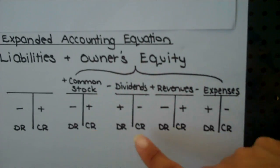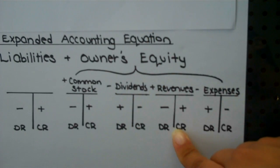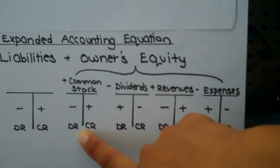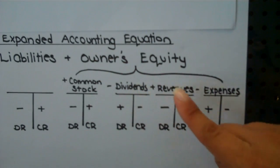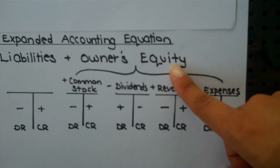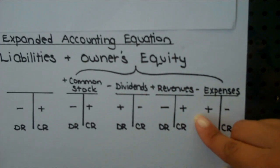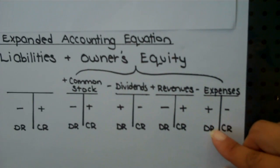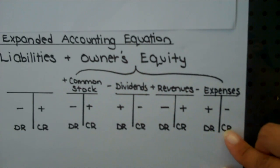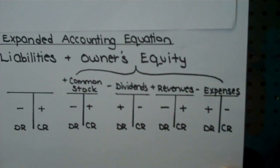Common stock and revenues are identical, both increasing on the right-hand side. If you wanted to decrease either one of those accounts, you would do so with an entry on the left-hand side or the debit side. Dividends and expenses both decrease owner's equity, therefore they will have the opposite normal balance. So they will increase with an entry on the left or debit side, and to decrease those accounts, you would make an entry on the right or credit side.